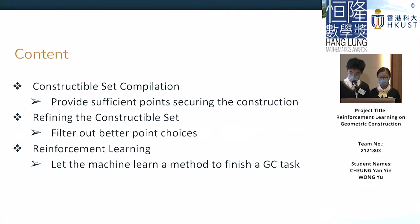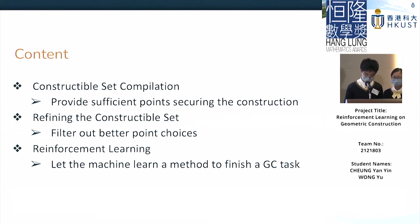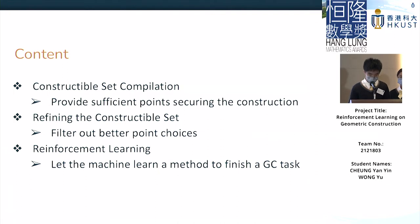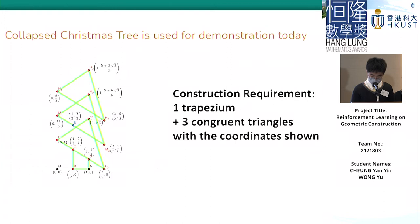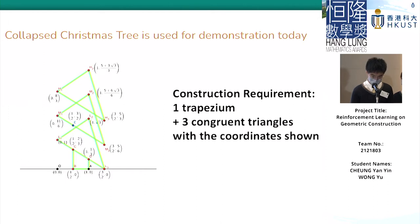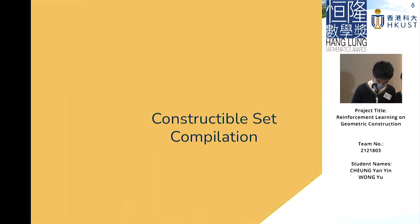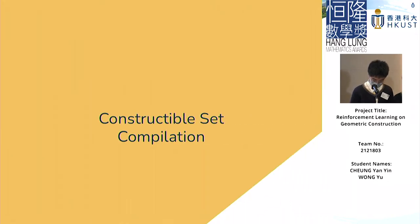This topic will cover three major parts. The first part is constructible set compilation, where we compile the points into one constructible set. The second part is to refine the set, and ultimately we're going to perform reinforcement learning on it. We'll use this task as a demonstration, designed to show our workflow's flexibility in handling different tasks.